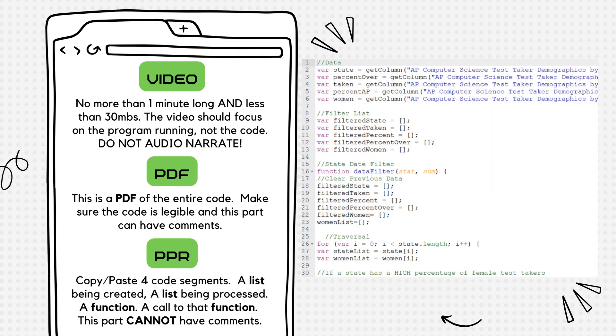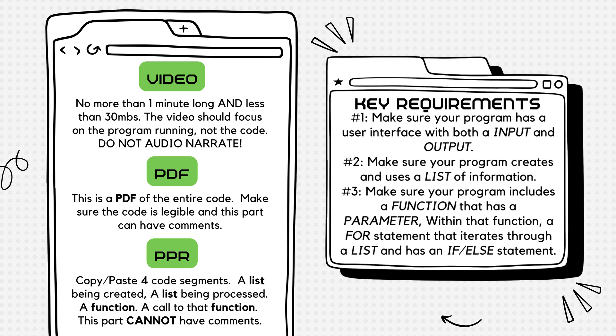Next up is the PDF of your entire code — make sure it's legible. This part of the code can have comments. Your code needs to have a list, sequencing (which is a function that also needs to include a parameter), and that function needs to iterate through a list using a for statement. And finally, you need selection, which is an if and else statement. That is it — no more, no less. Please keep it simple. AP is looking for you to satisfy these requirements, not dazzle them with your amazing coding skills.